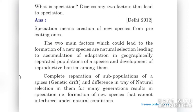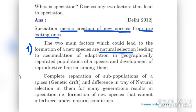What is speciation? Speciation means the creation of new species from pre-existing ones. Two factors that lead to speciation: first, natural selection — there could be natural selection leading to formation of new species, such as due to reproductive barriers or separated populations due to geographical barriers. Second, genetic drift — changes in the genes that organisms carry as heredity, leading to divergence of a population.